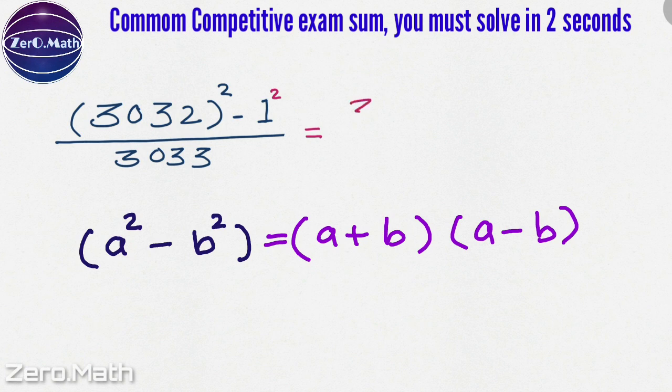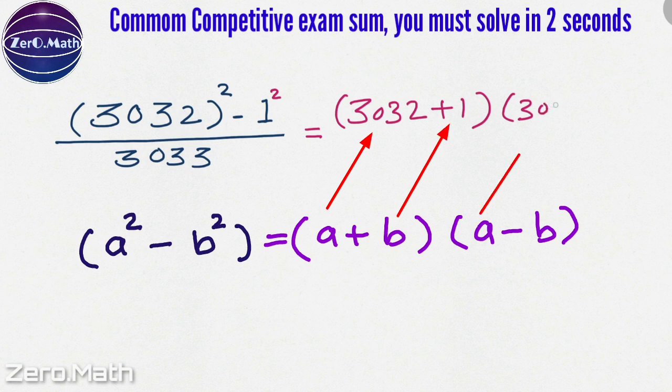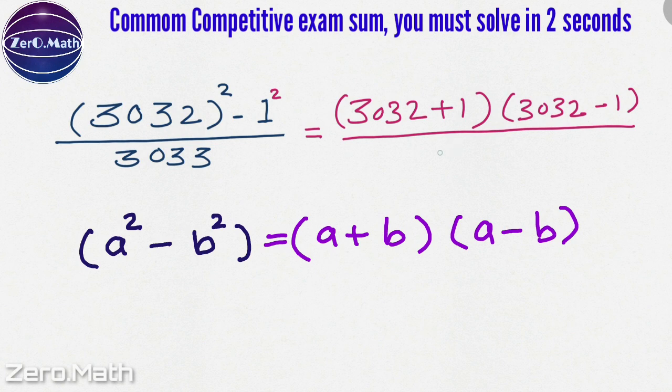We can simplify the numerator as 3032 plus 1 into 3032 minus 1 and write down the denominator as it is. So, write down 3033 in the denominator.